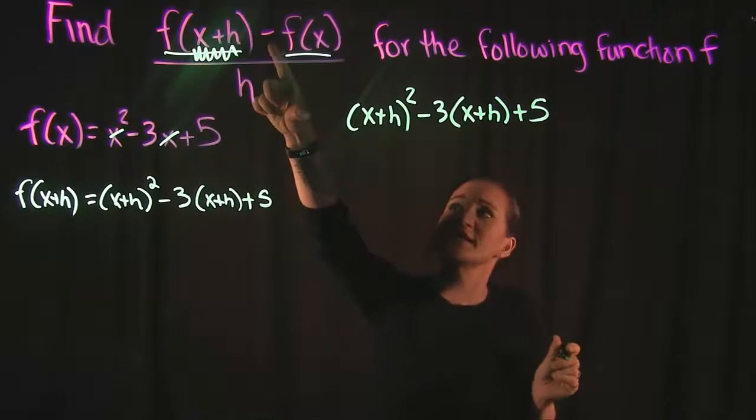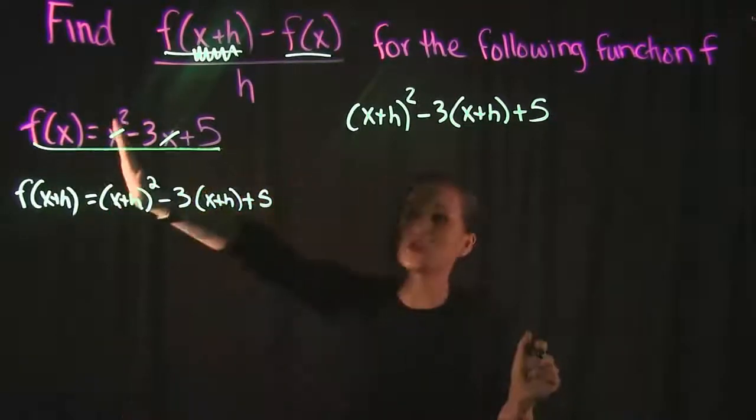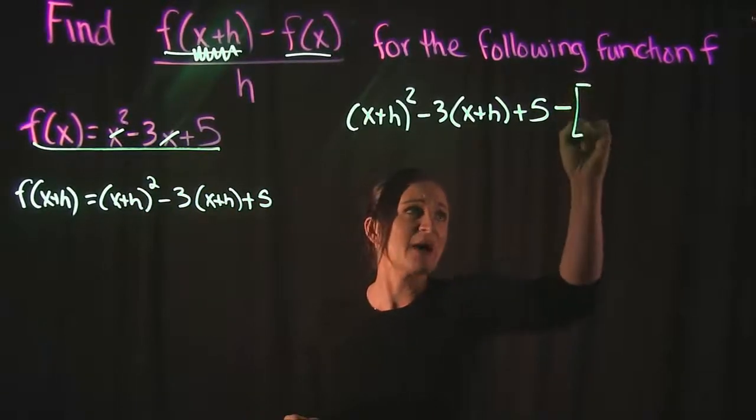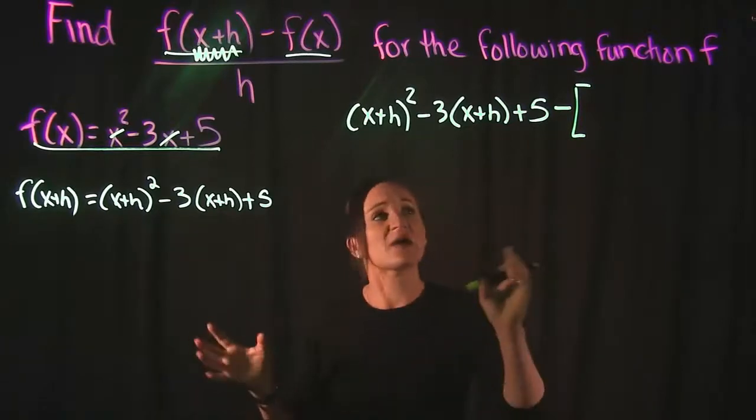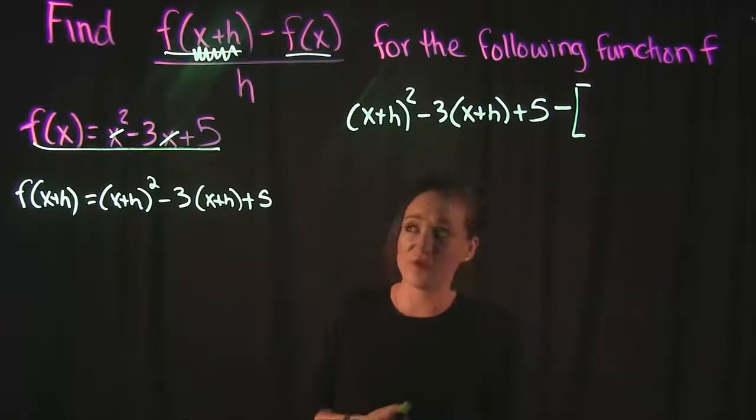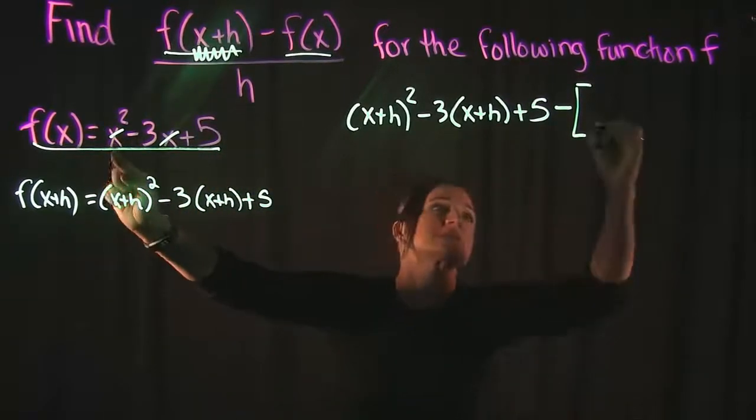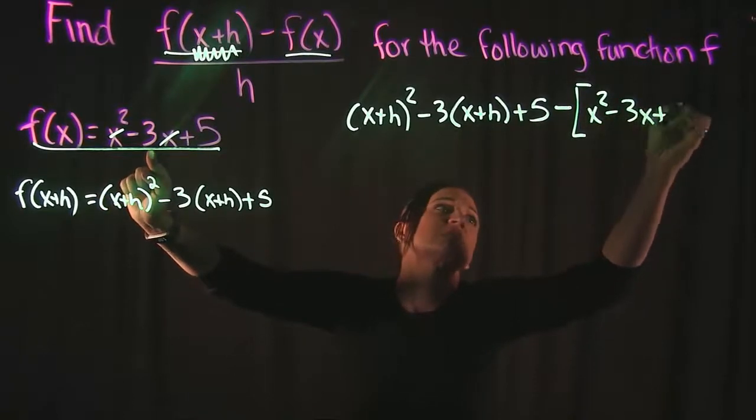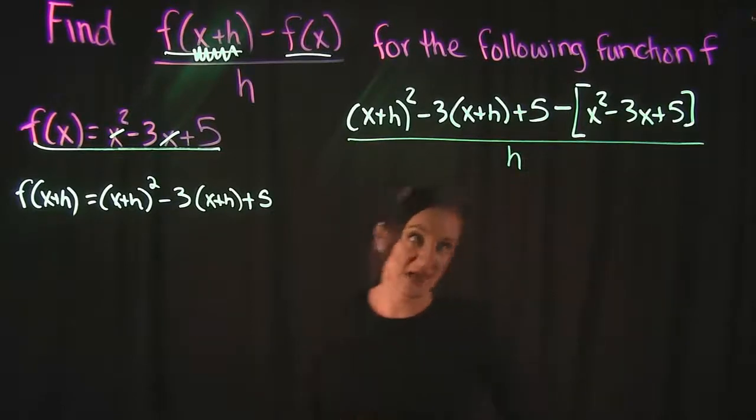So it's going to look like (x+h) squared minus 3 times (x+h) plus 5. The next part says, subtract f(x). So f(x) is just our original function that they gave us. So we're going to say minus, and because it's a minus, I'm going to put f(x) in brackets, because we have to subtract the entire function away. So I'm going to just minus all of f(x), and f(x) is x squared minus 3x plus 5. And then it says that we're going to divide this by h.